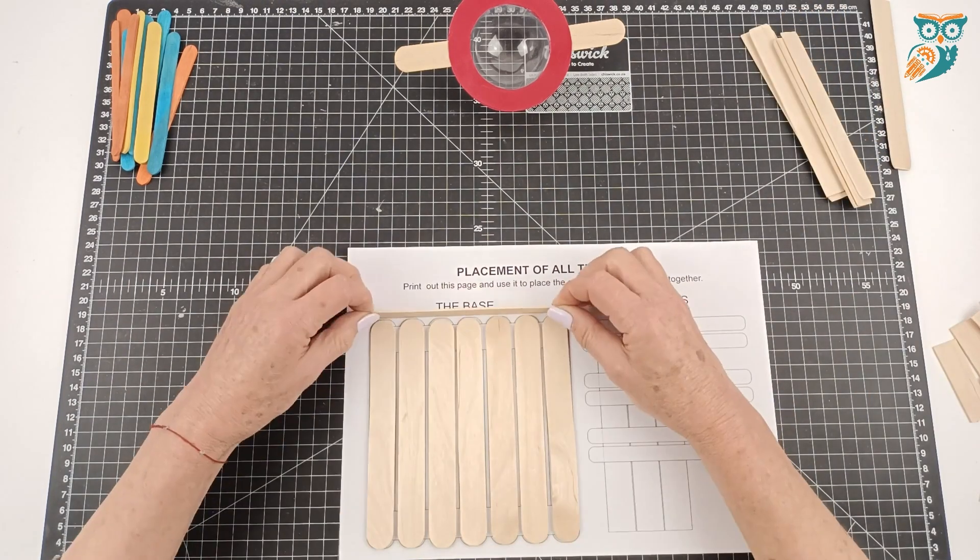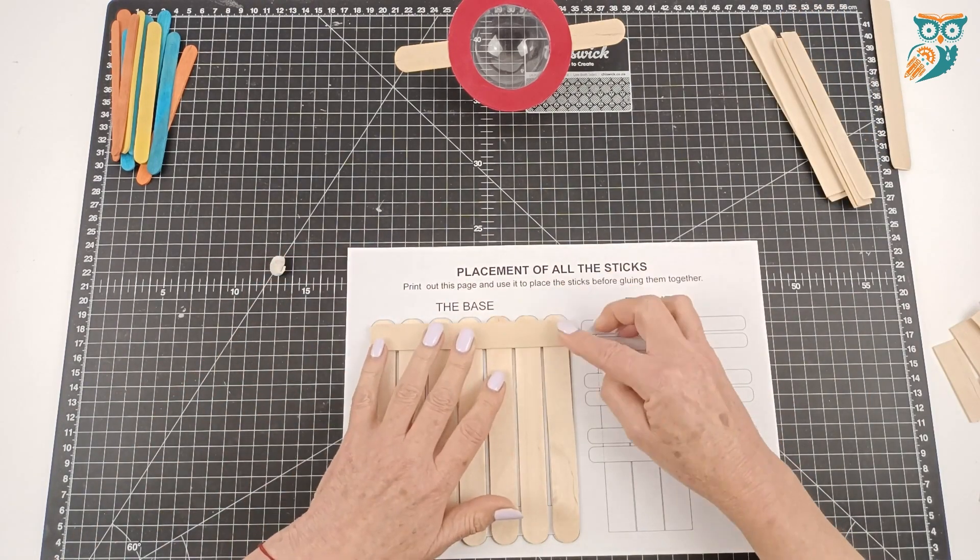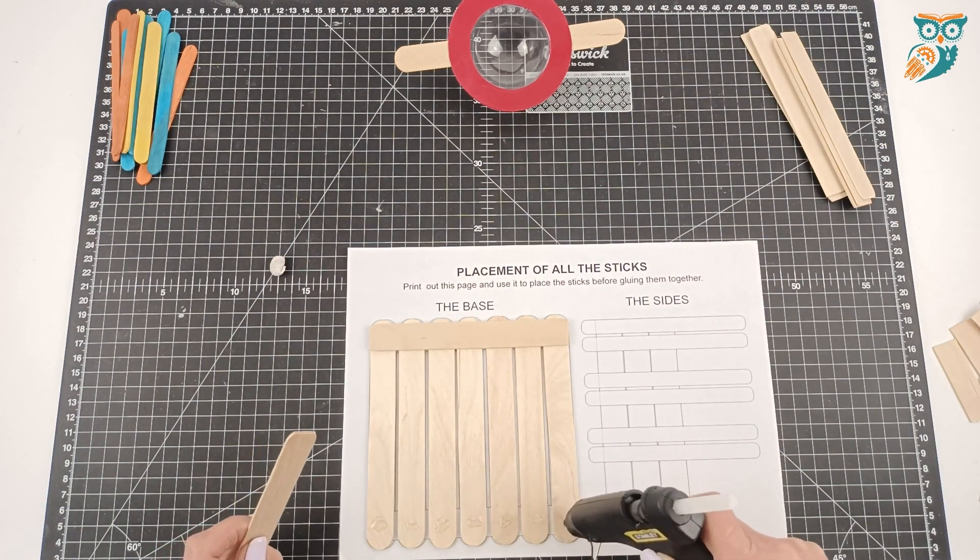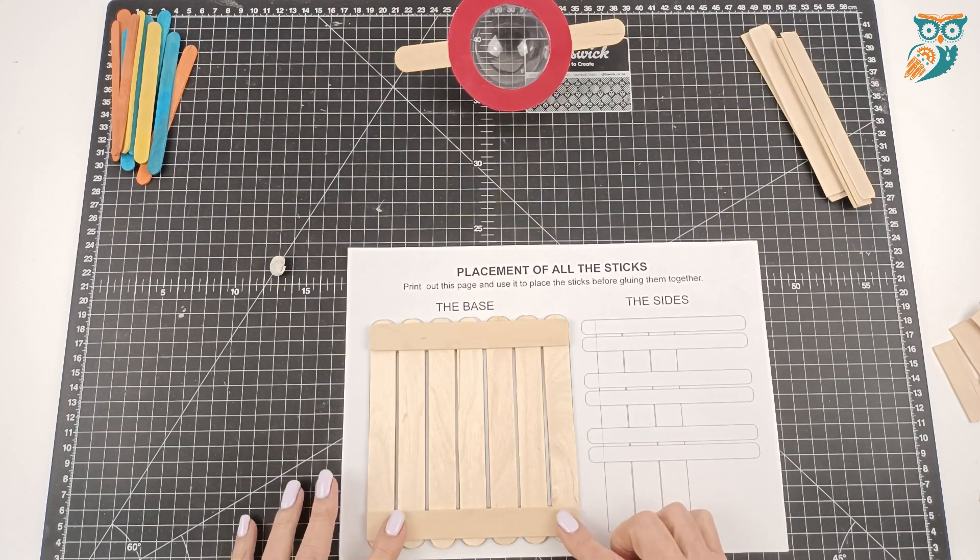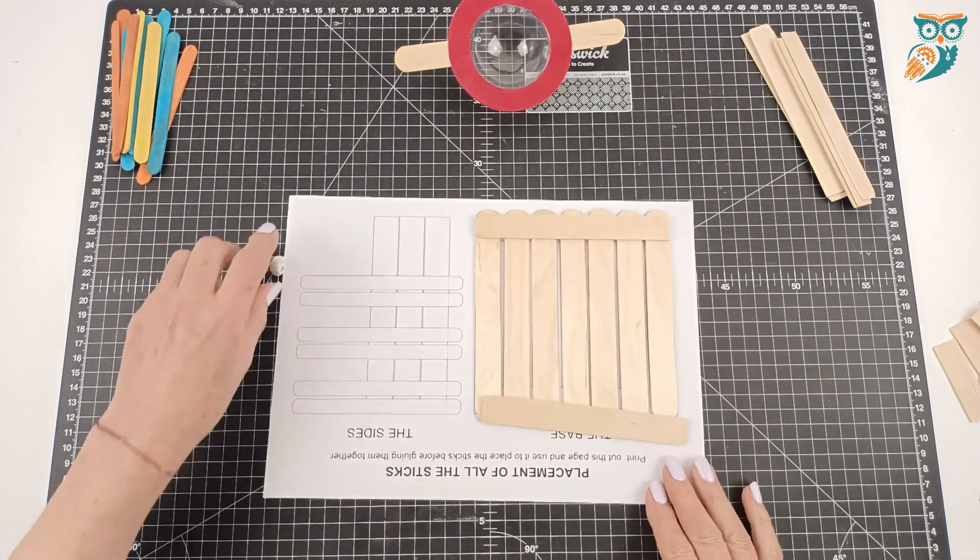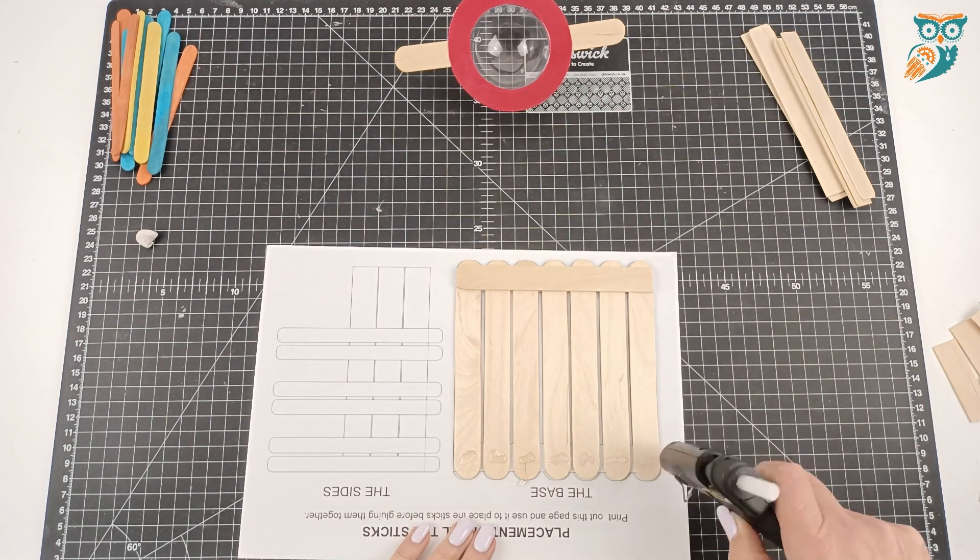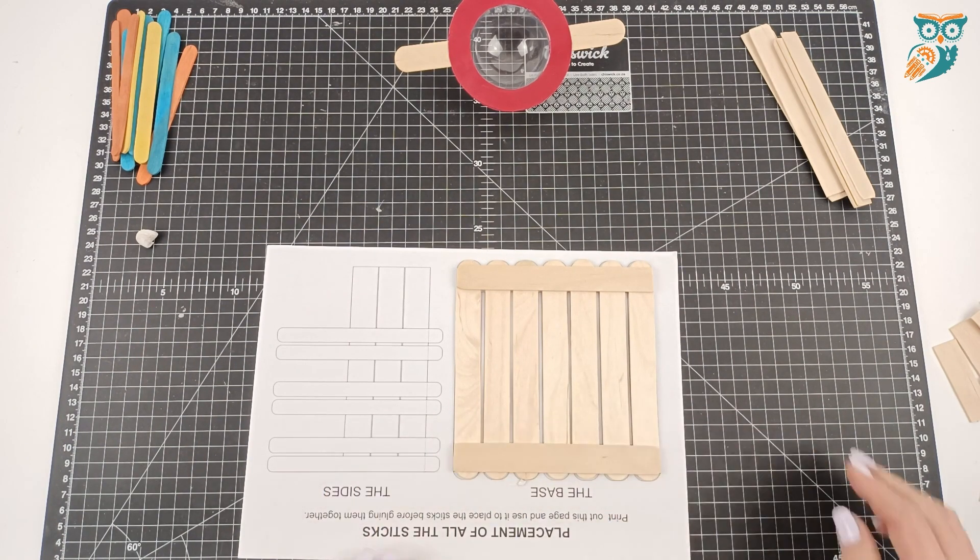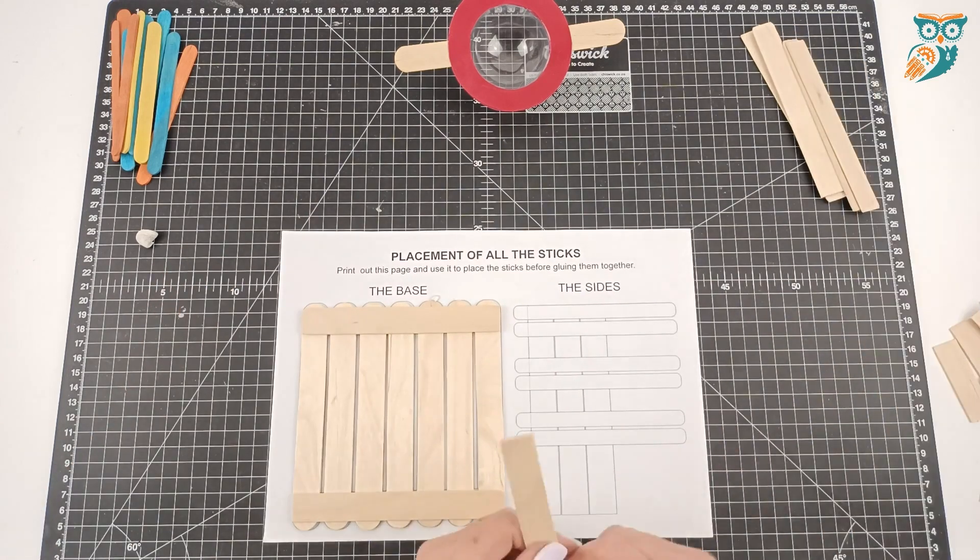There we go. They're all in place now. Make sure they're nice and straight, and then we can go ahead and glue the crossbars onto the base. See how easy that blue tack makes it? It keeps everything in place, so much easier for little hands especially, or older hands.